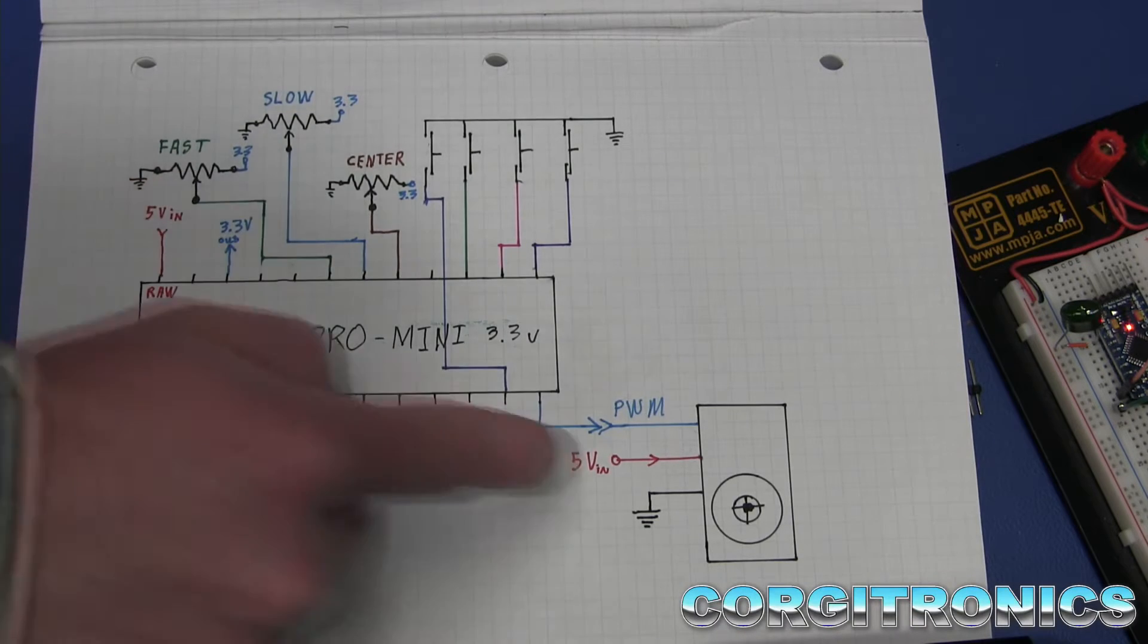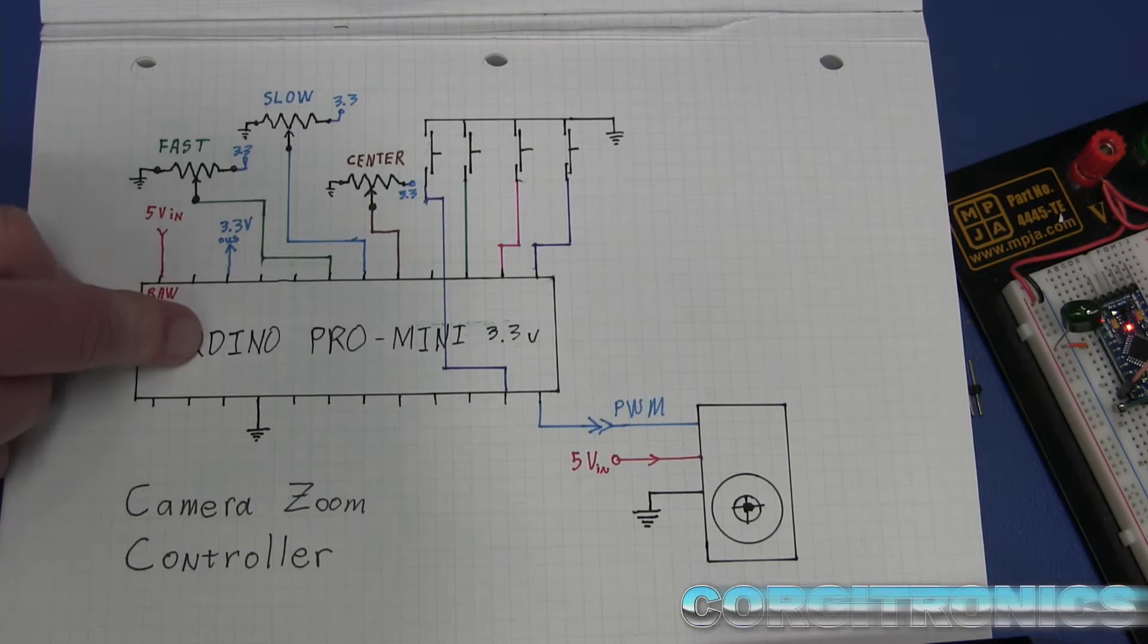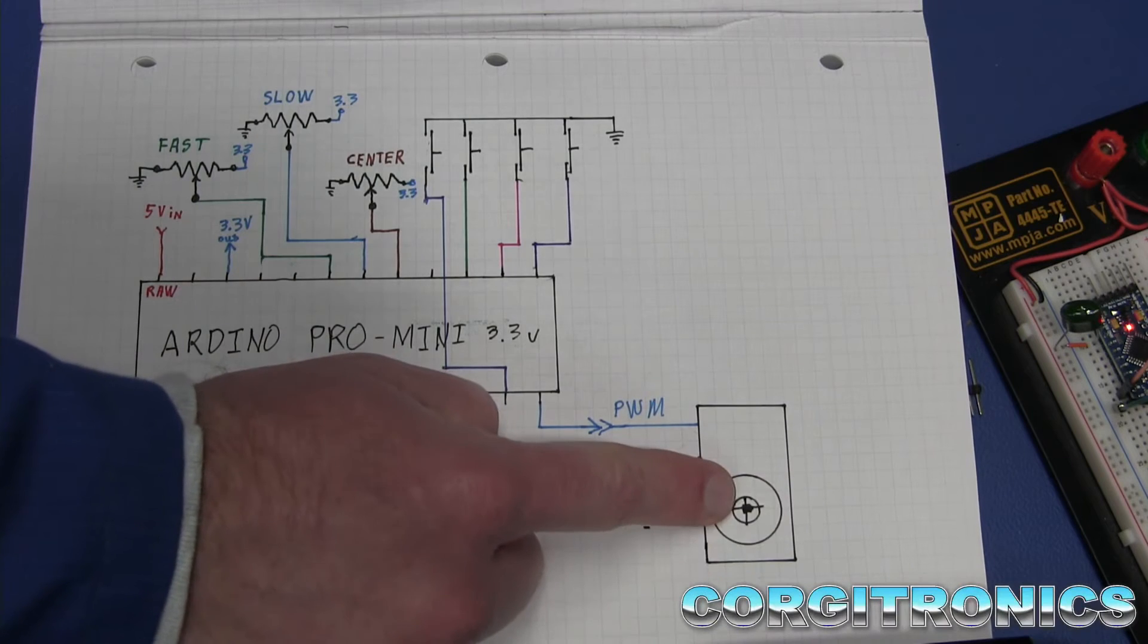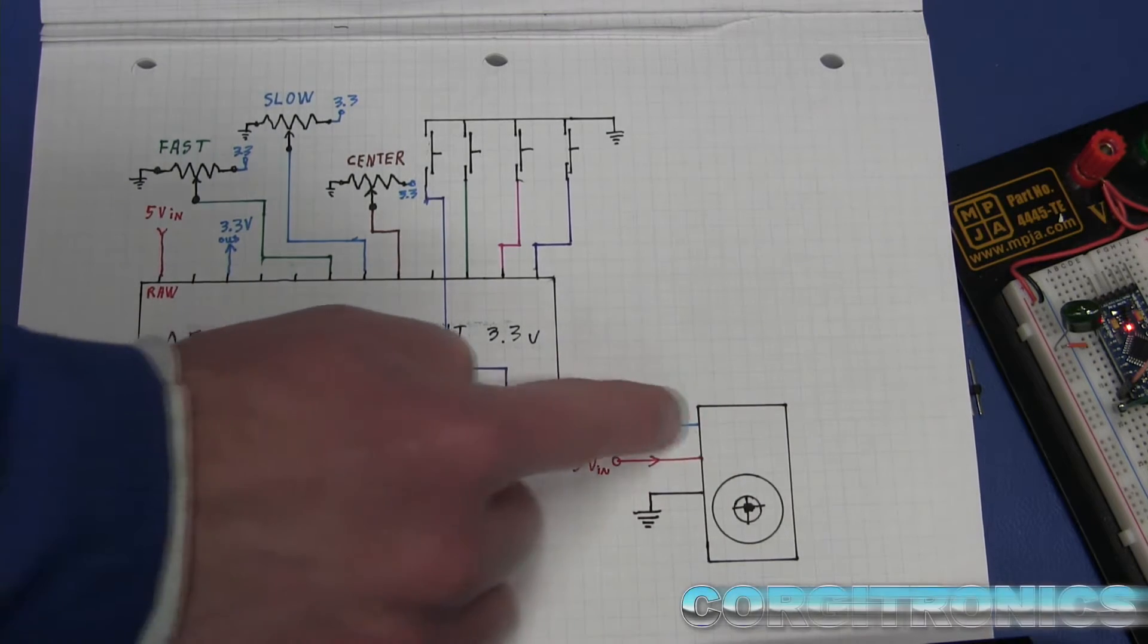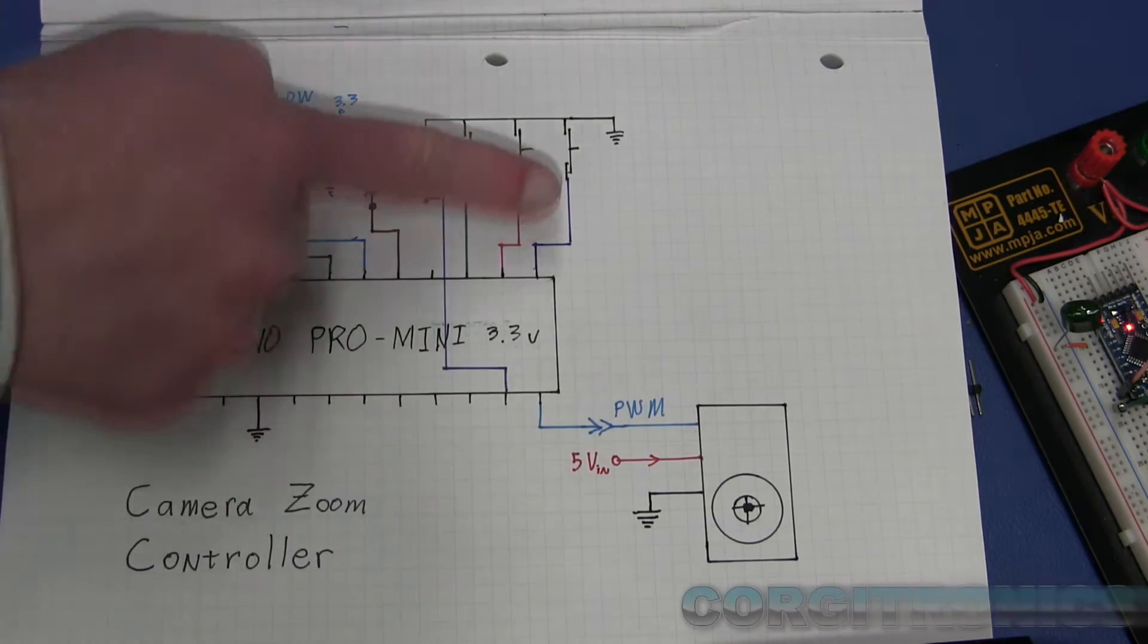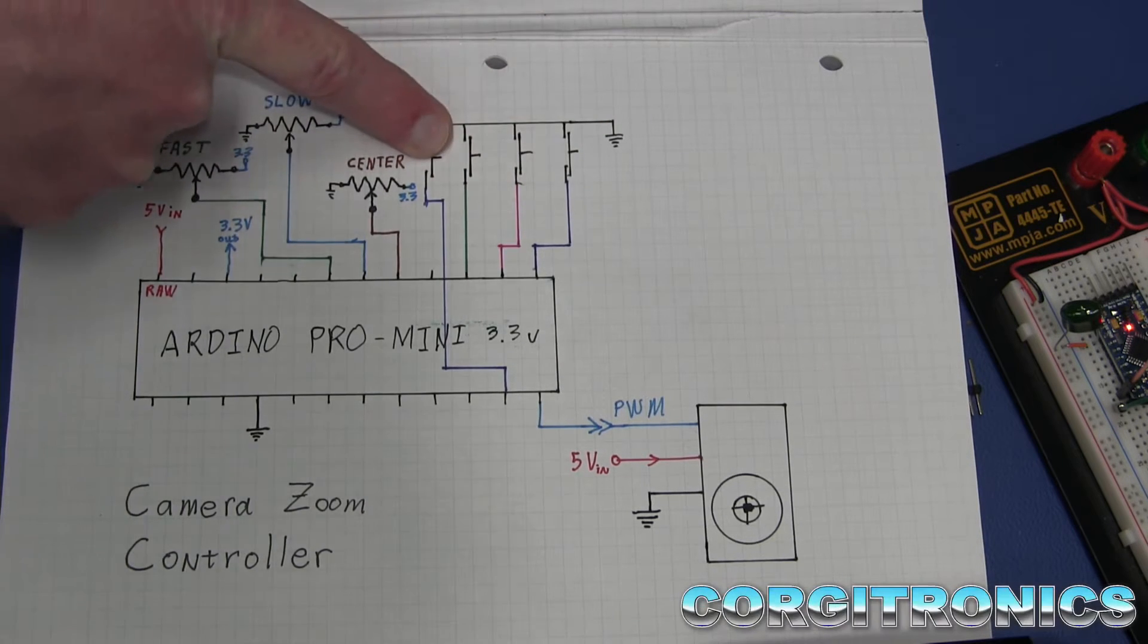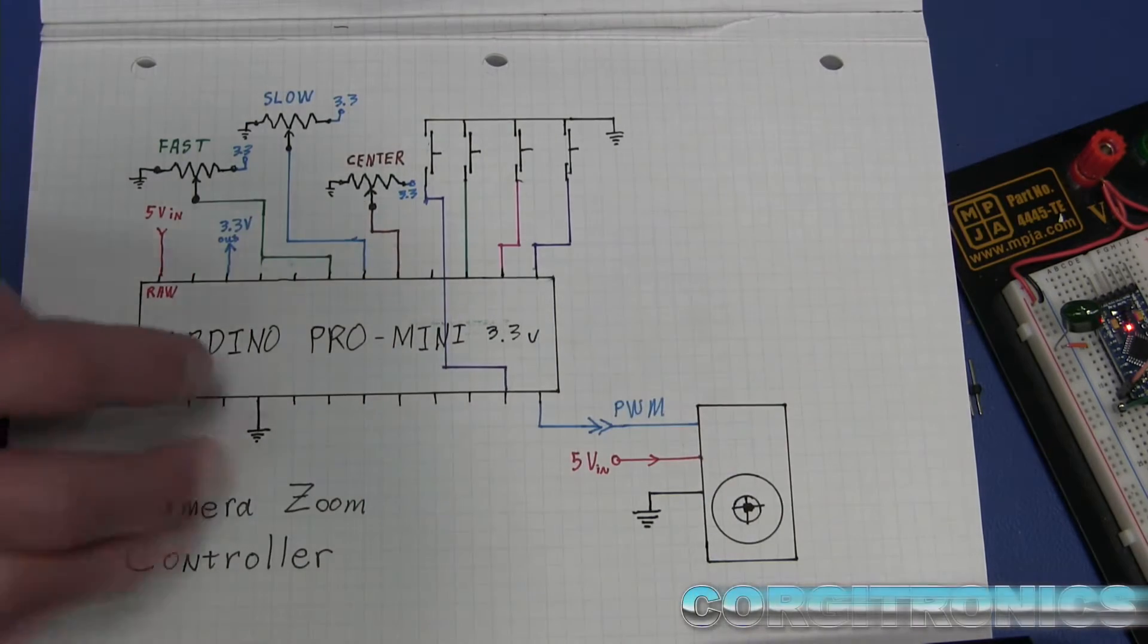This will all run on 5 volts. However, the Arduino Pro Mini is 3.3 volts. Not to worry, the servo can handle a 3.3 volt input on its PWM pin and it doesn't have to be a 5 volt PWM signal. Just 3.3 volts will work. And then we have four buttons for slow zoom in, slow zoom out, fast zoom in, fast zoom out. And the PWM out. And that's about it.